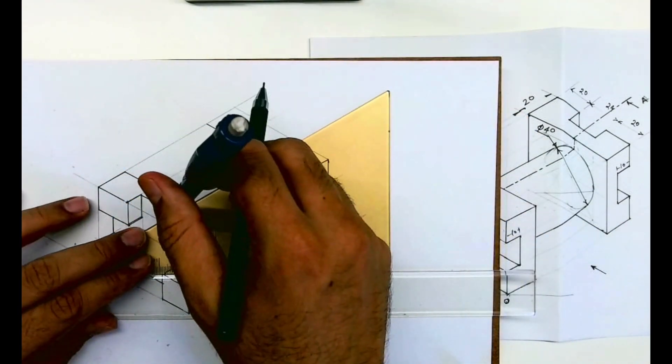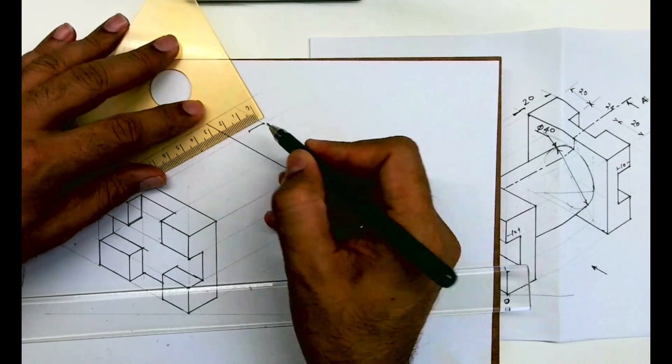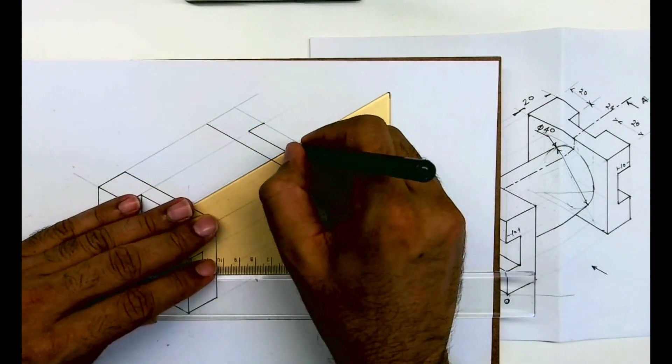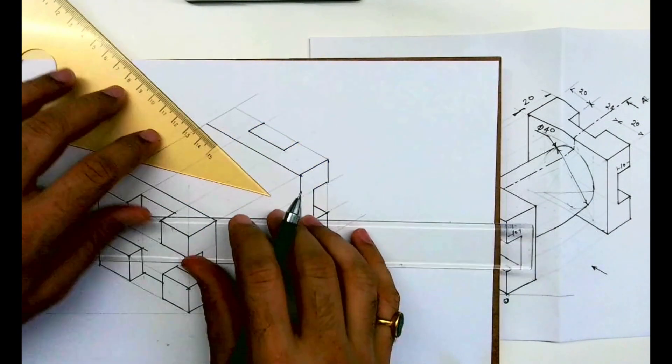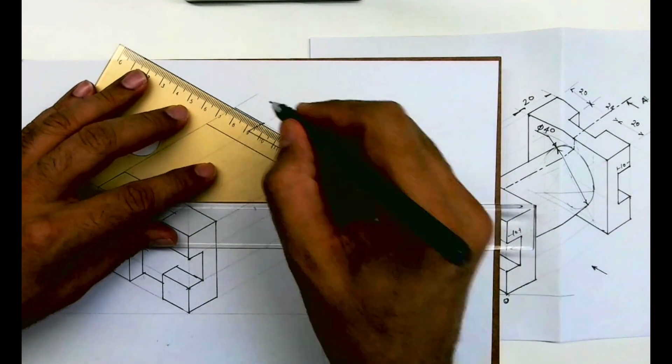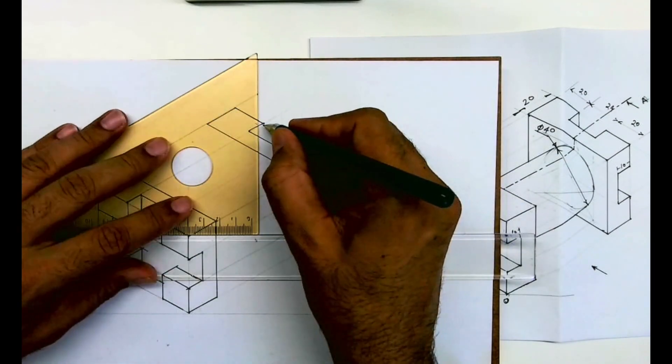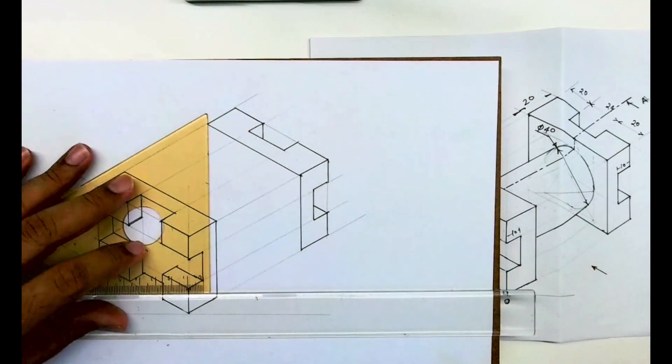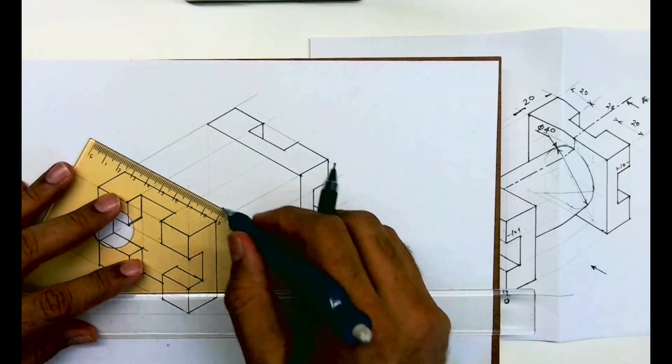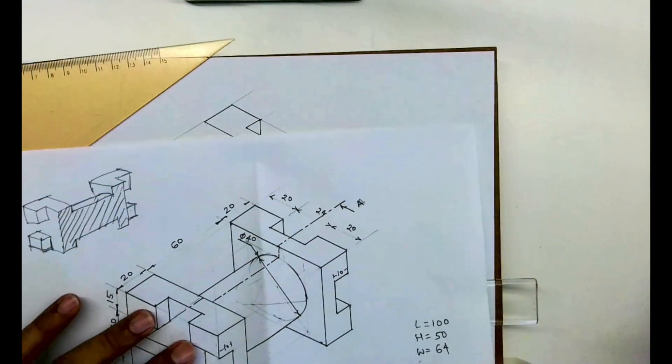Then extend from here to get the upper part. Then I'm drawing this inside part. Now if you see this circular part, diameter is 40.